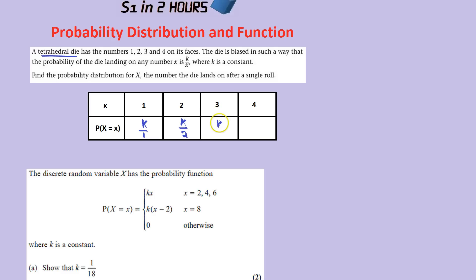This would be a K over 3. So don't be put off by the fact that they use some algebra. All it means is the probability of getting, say, a 4, is you just put the number 4 into this expression. So it would be K over 4.